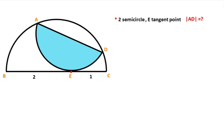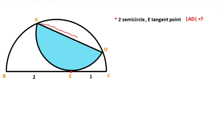Hello everyone. In this video we have two semicircles and point E is given as a tangent point. This length is given as two, and here is given one. The question is: what is the diameter of the blue semicircle?